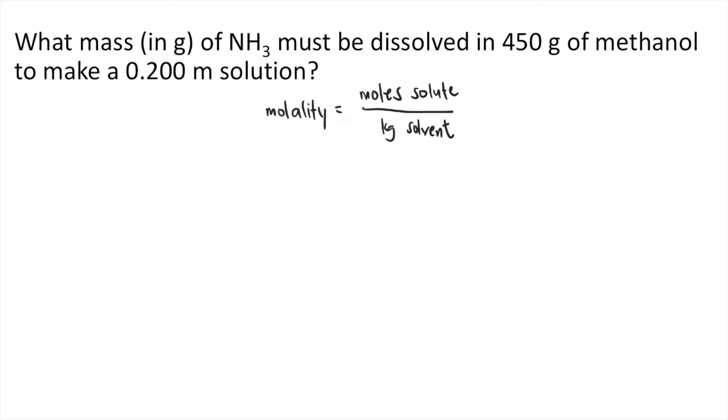In the problem, we are given 0.200 molal. Molal or M can also be expressed as moles per kilogram. So that's 0.200 moles per kilogram, and that's equal to the moles of solute divided by, in the problem, we are given 450 grams of methanol.